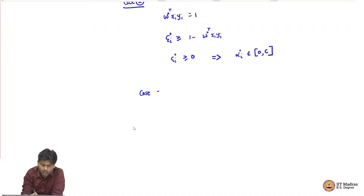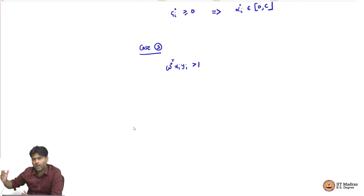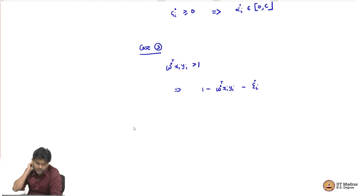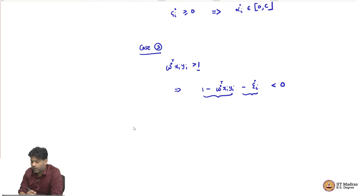The third case is the good points where W star transpose x_i y_i is greater than 1, which means the points which you are classifying with margin greater than 1 — well away from your supporting hyperplane. Now this implies that 1 minus W star transpose x_i y_i minus epsilon star_i: if W star transpose x_i y_i is greater than 1, this quantity is less than 0, and because epsilon star_i is greater than or equal to 0, we can say this is a negative quantity. So this whole thing is strictly less than 0, and by complementary slackness 1, we can conclude that alpha star_i has to be 0.